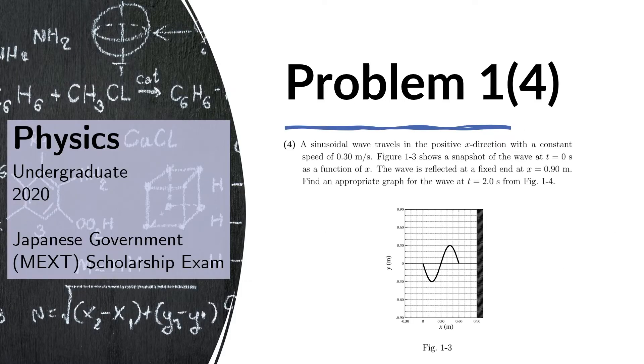Problem 4 of Part 1 reads: a sinusoidal wave travels in the positive x direction with a constant speed of 0.30 meters per second. Figure 1-3 shows a snapshot of the wave at t equals 0 seconds as a function of x. The wave is reflected at a fixed end at x equals 0.90 meters. Find an appropriate graph for the wave at t equals 2.0 seconds from Figure 1-4. Figure 1-4 is not here, it's in the next slides containing the choices.